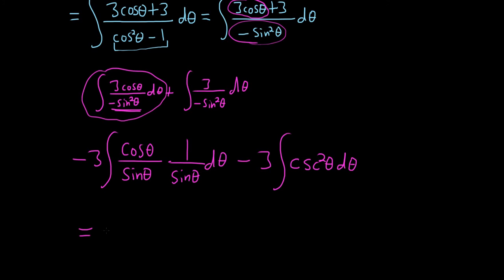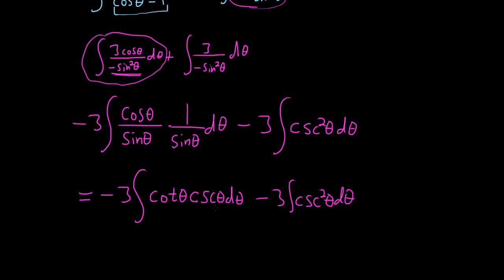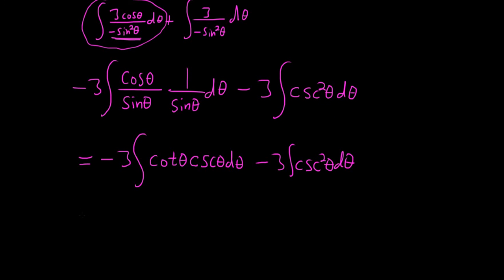And we can also rewrite the first one now. This is negative 3. Cosine over sine is cotangent theta. 1 over sine is cosecant theta. And then we just have this piece here minus 3 cosecant squared theta d theta. So just a lot of rewriting, a lot of trig in this problem. And now we're going to go straight to the answer.